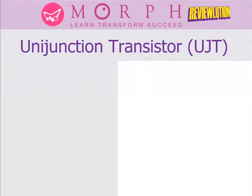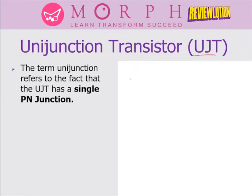Let's continue with the UJT or Unijunction Transistor. So far we have discussed Shockley, SER, Diac, Triac, and SCS, and all of them can be considered as members of the thyristor family. But the UJT is not a member of the thyristor family. From the word 'Unijunction,' we know that a thyristor has three junctions, but a UJT has only one junction — so Unijunction. The term Unijunction refers to the fact that the UJT only has one junction.